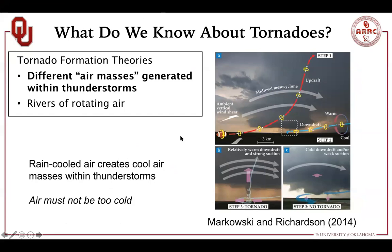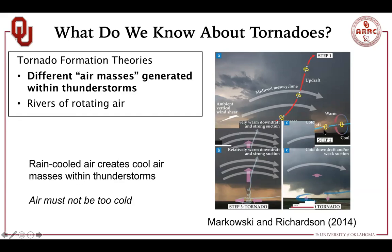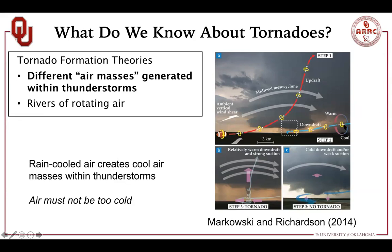One of the most important things we know about tornadoes is how they form. One common theory is that different air masses are generated within the thunderstorm. Outside the storm the air coming in is usually warm and moist, but inside there are large areas of precipitation that generate rain-cooled air. This rain-cooled air creates a temperature gradient that can produce rotation at the interface of this boundary — oriented about a horizontal axis rather than a vertical axis like a tornado. The rain-cooled air at this boundary generates horizontal rotation that gets drawn into the storm, and then either the updraft or downdraft turns it upward or downward, orienting the rotation vertically. If the air is really cold it becomes difficult to lift and generate a tornado, but if it's not too cold a strong tornado can develop.